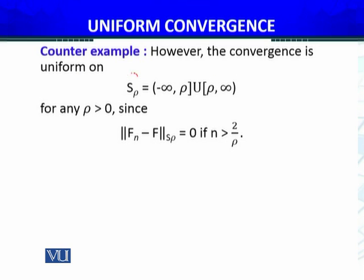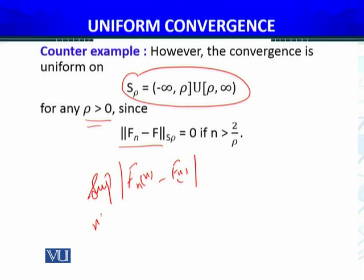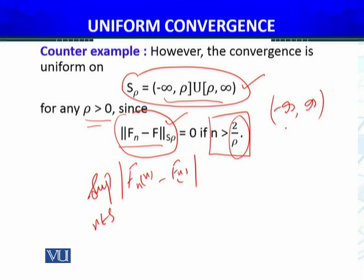Lekin isi function ko hum dekhte hain. However, the convergence is uniform on that set S_ρ = (-∞, ρ] ∪ [ρ, ∞) for any ρ > 0, since ||F_n - F||_{S_ρ} = 0 if n > 2/ρ. Ab yahan pe dekhe, yeh capital N jo hai, isse yeh koi bhi real number hai. And any integer which is greater than this one, uske liye this is true by definition of the piecewise defined function. So slightly change kerne se we have found a set S_ρ such that the same sequence of functions is uniformly convergent on this set rather than minus infinity, infinity pe woh uniformly convergent nahi tha, humne sabit kiya yeh.